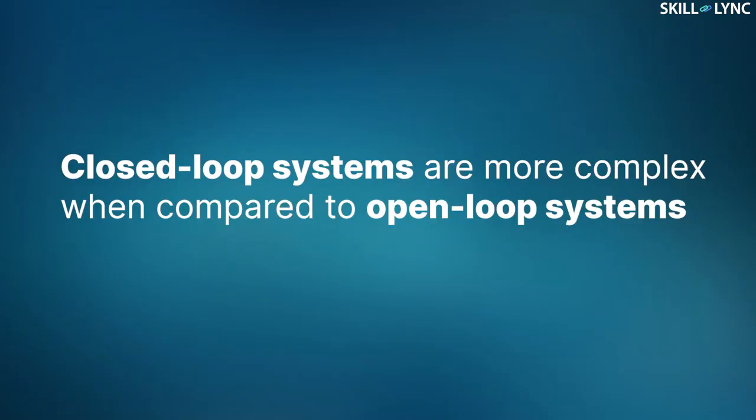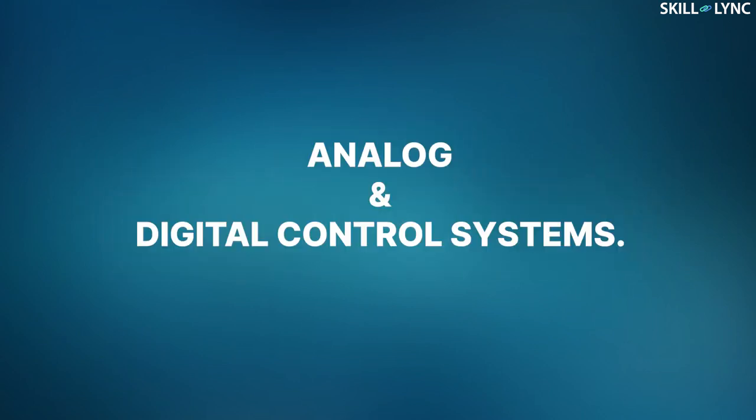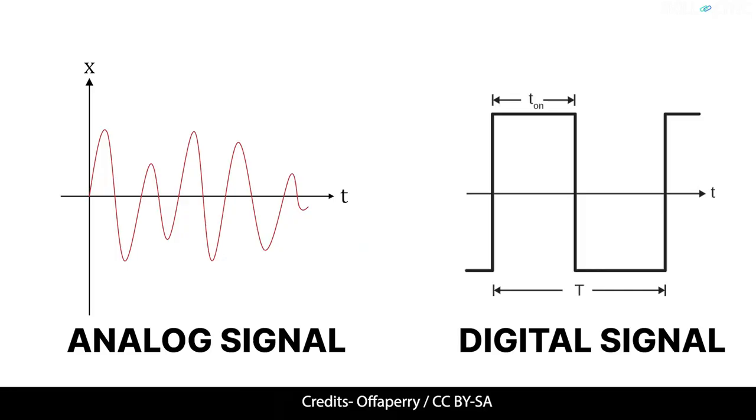Next we'll talk about analog and digital control systems. In an analog system, the output varies continuously with time, which can be represented by a continuous function. However, in a digital system, the output can be considered to be a series of on and off signals in which data is represented as a sequence of discrete values.